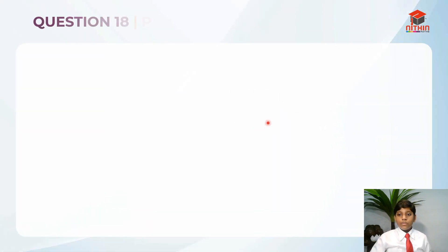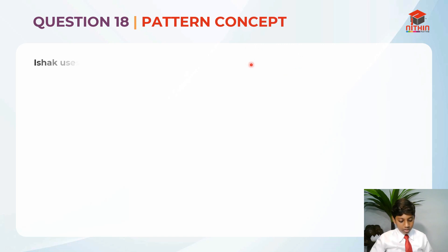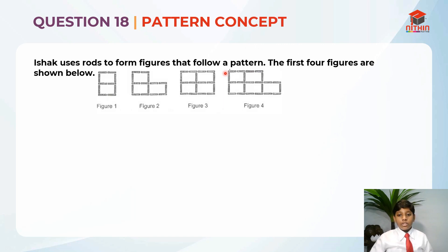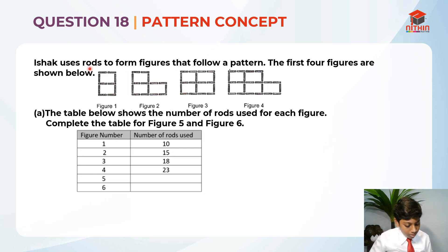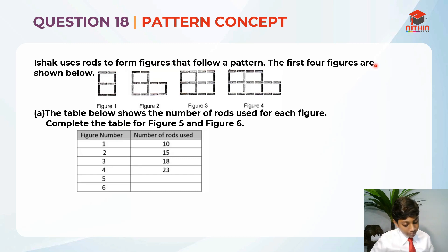This question is testing us on the pattern concept. This question has three parts. I'll be going through part A right now and part B and C later in this video. So let's read the question first. A-Shank uses rods to form figures that follow a pattern. The first four figures are shown below.